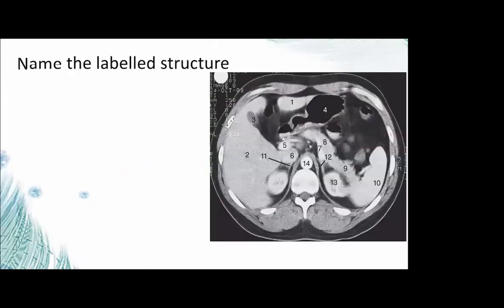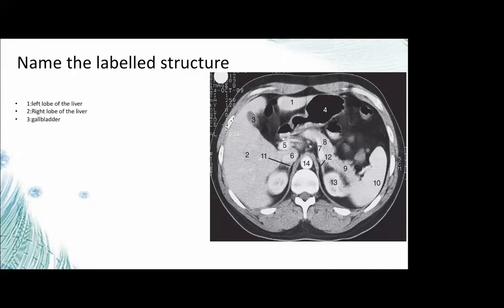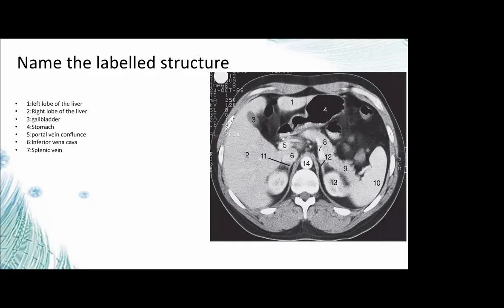A practical CT image identification session follows. Students are asked to identify structures on axial CT of the abdomen: number one — left lobe of the liver; number two — right lobe of the liver; number three — gallbladder; number four — stomach; number five — portal vein confluence; number seven — splenic vein; number eight — body of the pancreas.